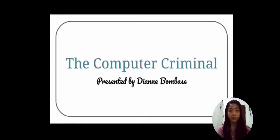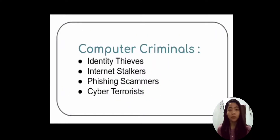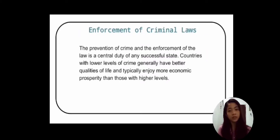Good day everyone, this is Diane reporting on the computer criminal and the innocent victim. Computer criminals are individuals or teams of people who use technology to commit malicious activities, up to stealing sensitive company information or personal data, and generating profit. Examples of computer criminals include identity thieves, internet stalkers, phishing scammers, and cyber terrorists. Computer crime prevention law provides rules of conduct and standards of behavior for use of the internet, computers, and related digital technologies. Computer crime law includes substantive, procedural, and preventive law. Enforcement of criminal laws is not untouched by technological advances, and how cybercrime is battled will be a defining issue in coming decades.